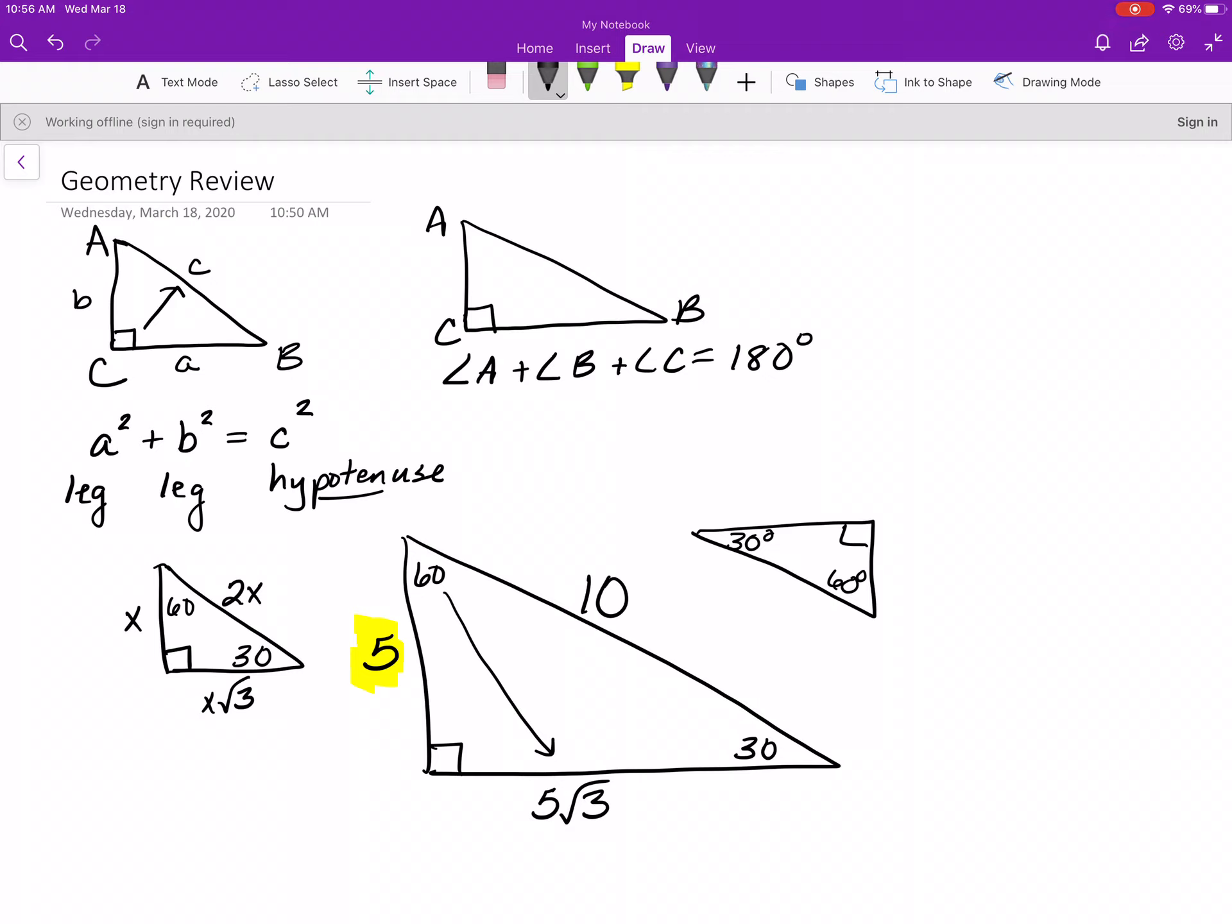And so a lot of times you'll see 1 to square root of 3 as the most simplified ratio for a 30-60-90 right triangle. So we call that a 30-60-90, and you need to memorize the relationship between the sides in a 30-60-90 right triangle.